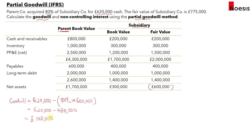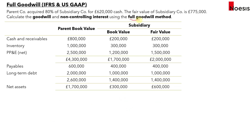To compute NCI under the partial goodwill method, we take the minority shareholder percentage of 20% — since 80% was acquired — and multiply by £600,000, giving NCI of £120,000. So Parent Co's share is £480,000 and the minority shareholders' share is £120,000. This NCI amount is reported under equity.